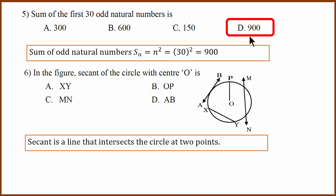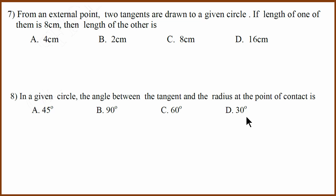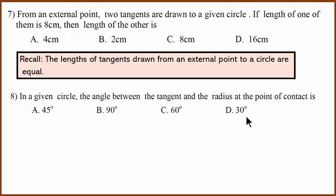Sixth question is a circle question. What is a secant? A secant is a line that intersects the circle at two points. In this case, MN is that line. Answer C. Seventh question: from an external point, two tangents are drawn to a given circle. If one of them is 8 cm, the length of the other is also 8 cm, because tangents drawn from an external point are equal in length. Answer is C.